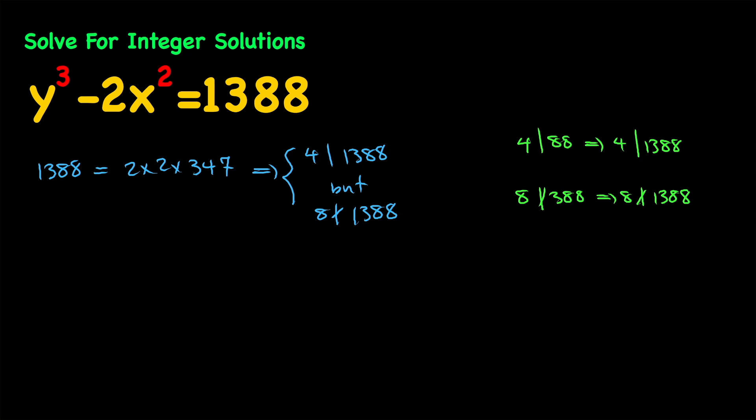Next let's go ahead and add 2x squared to both sides to isolate y cubed. So y cubed equals 2x squared plus 1388. Notice that 1388 is even, 2x squared is even, and the sum of two even numbers is even.